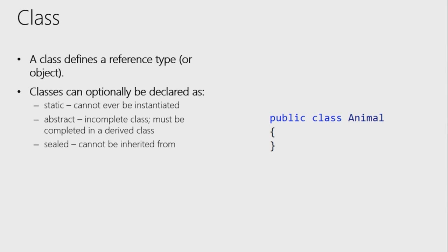You can decorate a class to describe exactly what type it is. A static class cannot be instantiated — the compiler prevents you from creating an instance. You would use it to expose static methods where there is no state being managed. It provides a library of behaviors without the cost of instantiation.